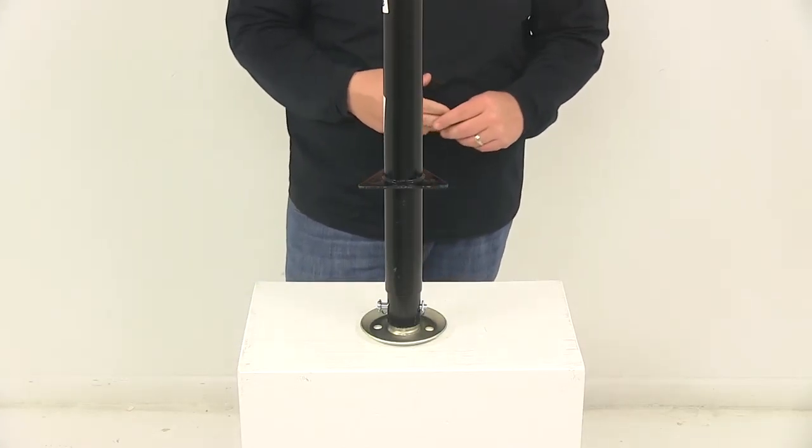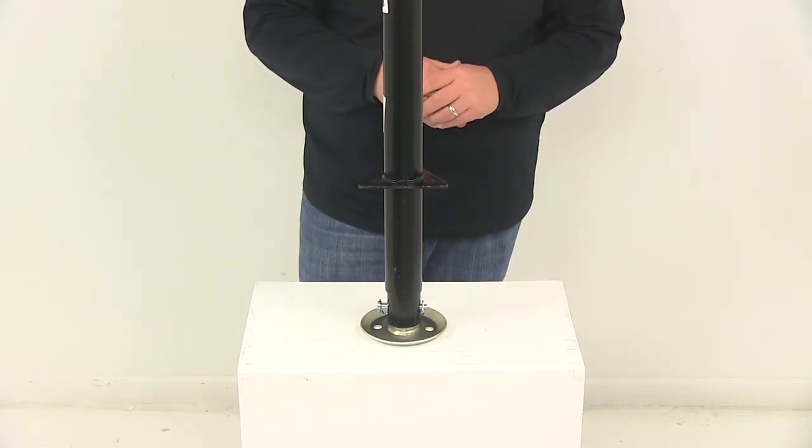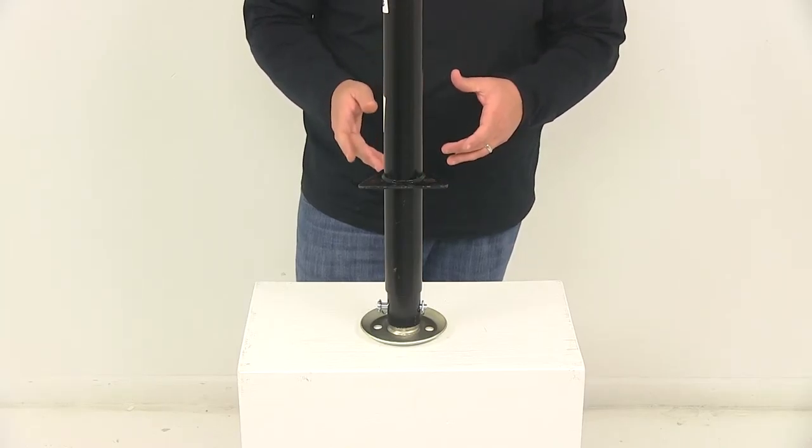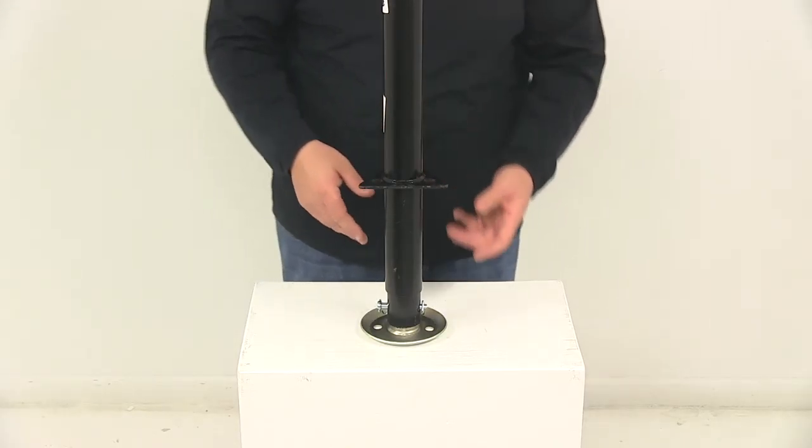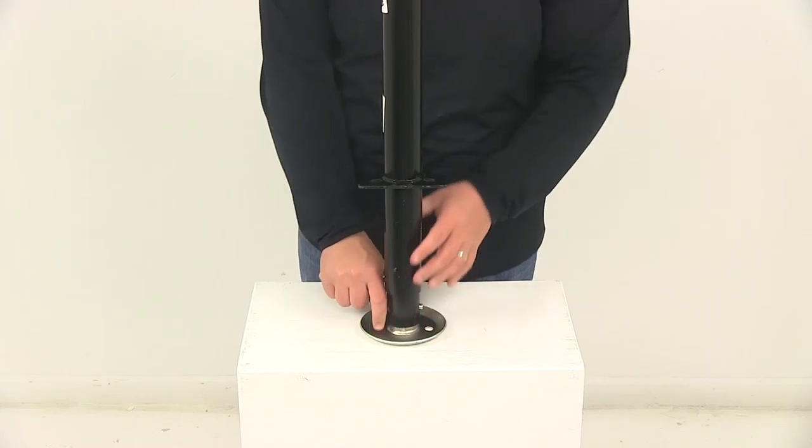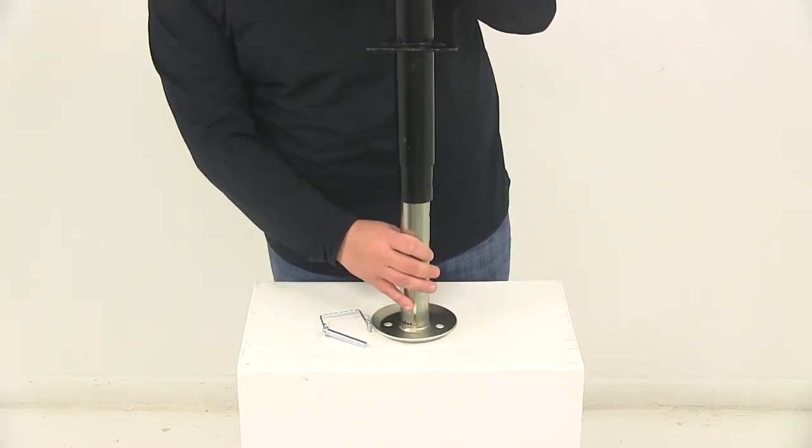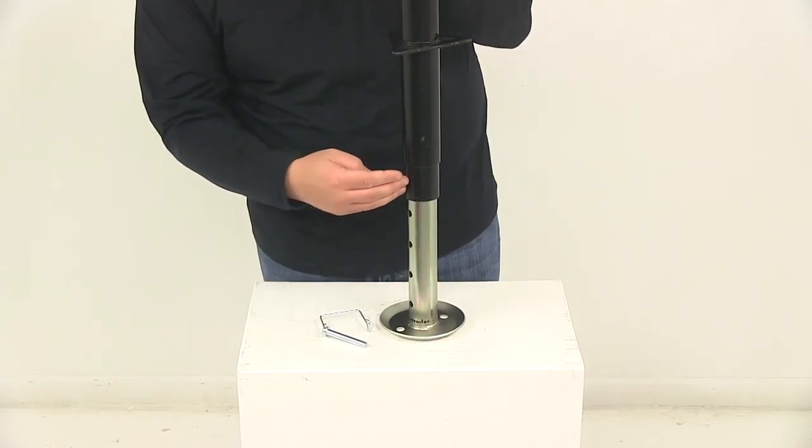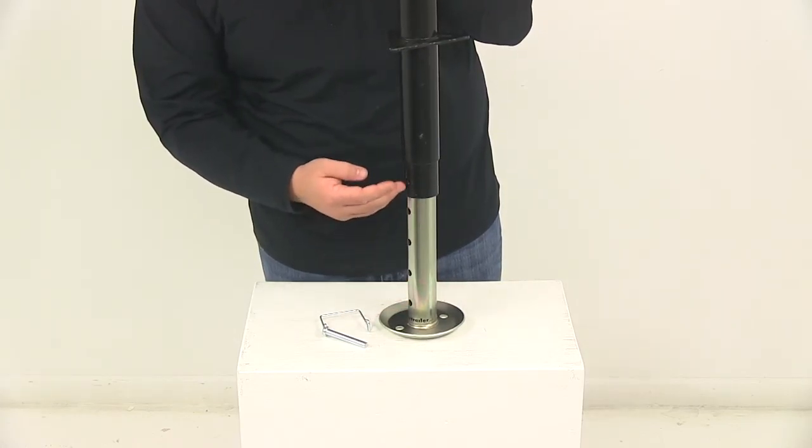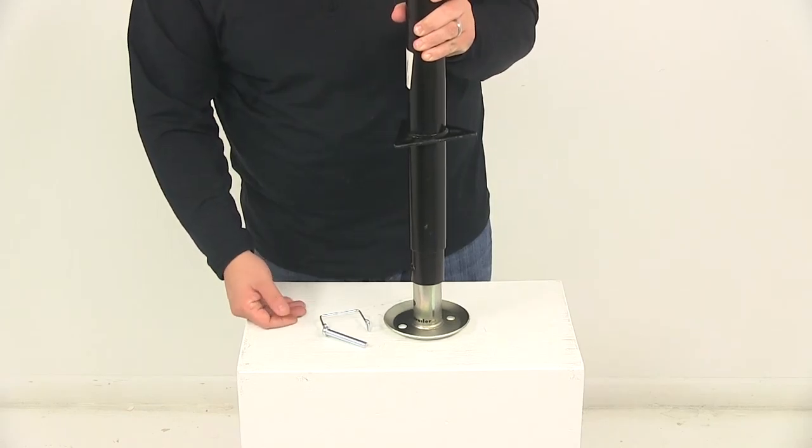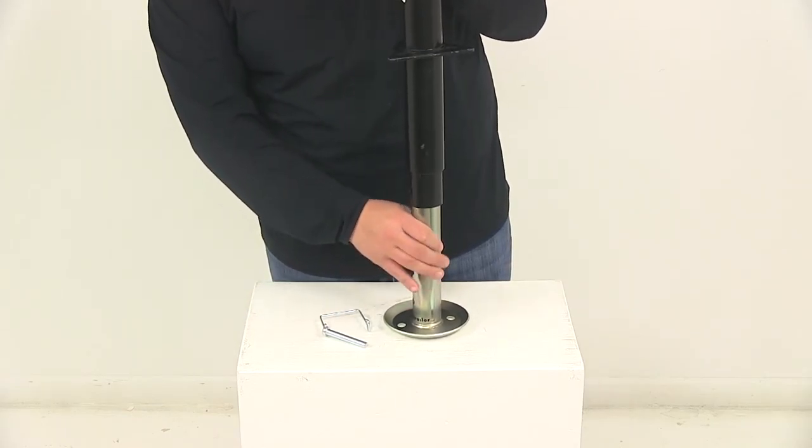When you get to your destination and you're setting up your trailer, to reduce the amount of cranking that you have to do, all you have to do is remove the pin, allow the drop leg to fall, then you can set it at its highest setting or anywhere you want in between the top and bottom holes and then re-secure it with the included pin and clip.